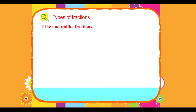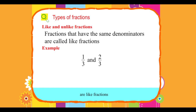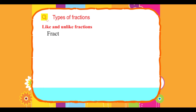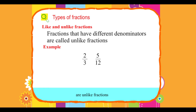Like and unlike fractions. Fractions that have the same denominators are called like fractions. Example: 1 upon 3 and 2 upon 3 are like fractions. Fractions that have different denominators are called unlike fractions. Example: 2 upon 3 and 5 upon 12 are unlike fractions.